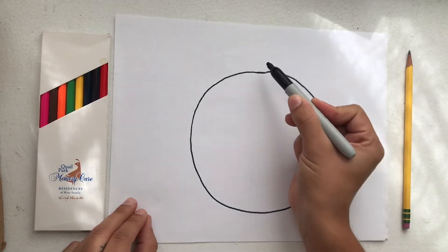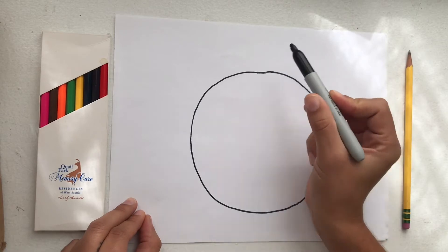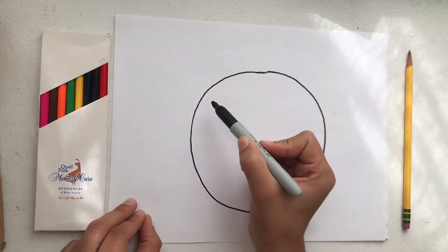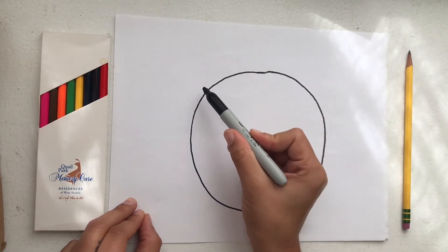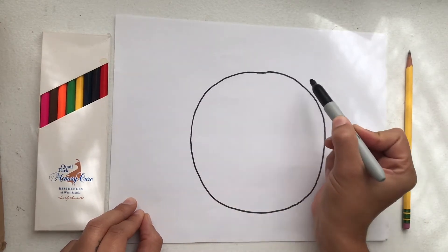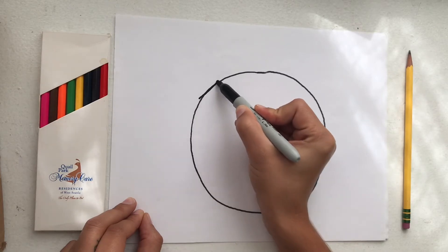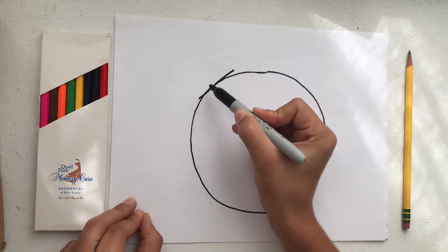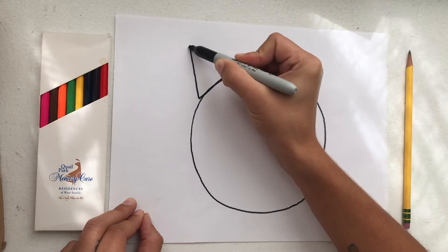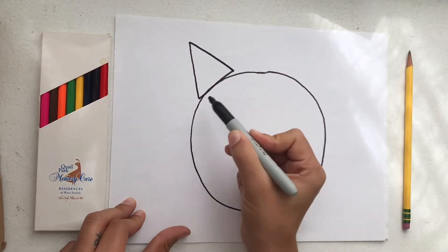Once we have a big circle in the middle of our paper, we are going to make our ears. Our ears are going to be two triangle shapes. So on either side of the circle I am going to draw two small triangles. I do my line and I create my triangle right on top of my kitty.